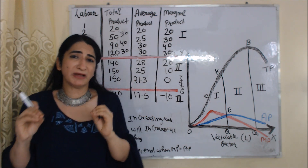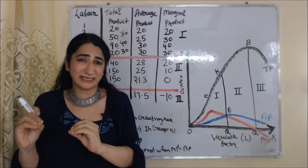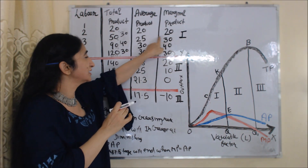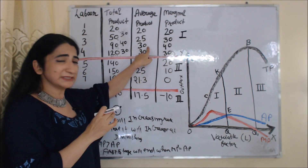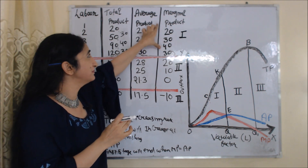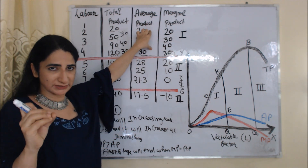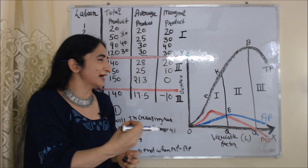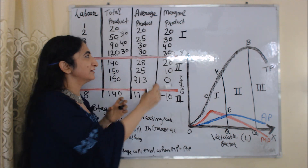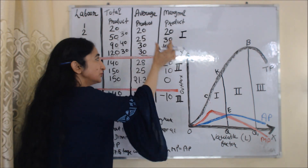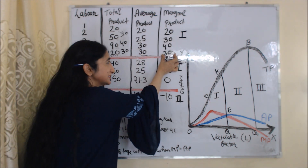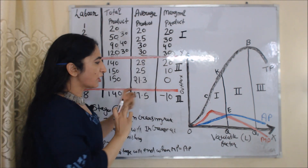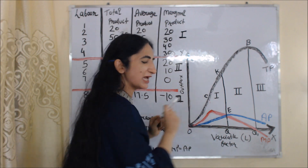Second: during the first stage, MP is more than AP. You can see MP is 30 and AP is 25; MP is 40 and AP is 30 — so MP is consistently more than AP during the first stage. Third: the first stage ends when MP becomes equal to AP. Here you can see MP is 30 and AP is also 30 — so the first stage ends at this point. In the diagram, from O to C, TP increases at an increasing rate; from C to K, TP increases at a diminishing rate. The MP curve is above the AP curve, and at point E, MP equals AP, marking the end of the first stage.